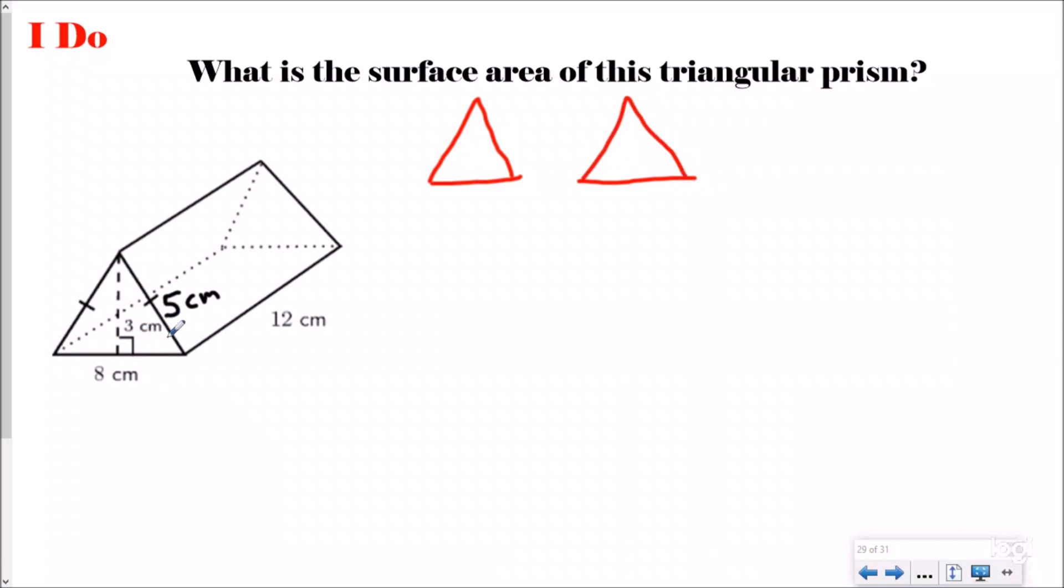I see right here that I have three different numbers, but I only really need to know the base and the height going back to our last video. The base of this triangle is 8, and the height is the dotted line going from across from the tallest point to the bottom point, which is 3.